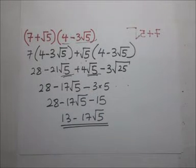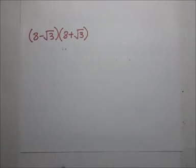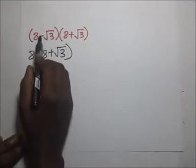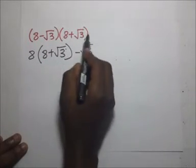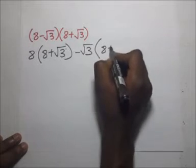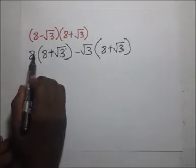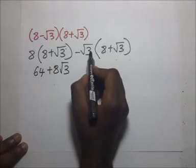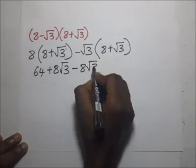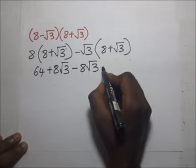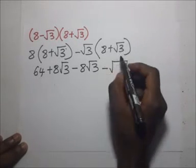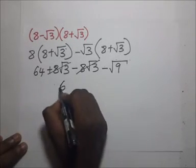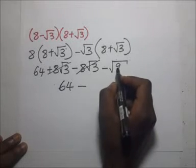Now we go ahead and do the next example. We open brackets: this becomes 8 times (8 + √3), then minus √3 times (8 + √3). Opening brackets: 8 times 8 is 64, and 8 times √3 is plus 8√3. Then negative √3 times 8 gives us minus 8√3, and negative √3 times positive √3 gives us negative (√3)², which is negative 3.